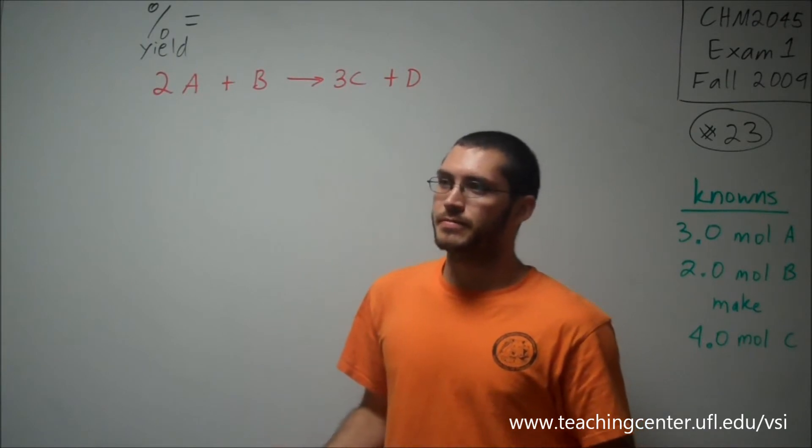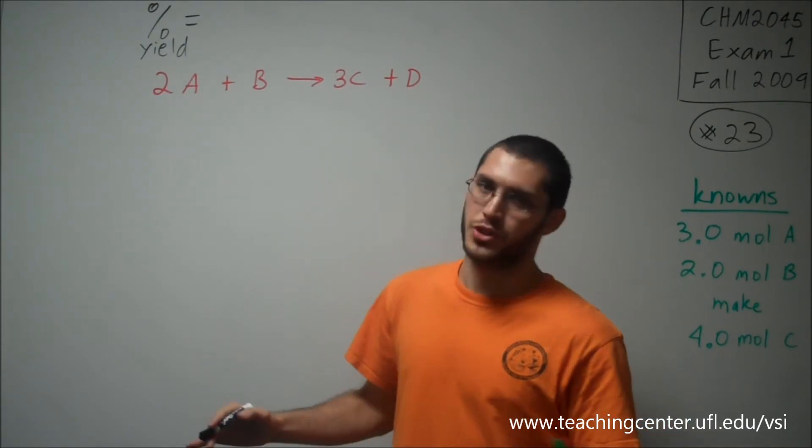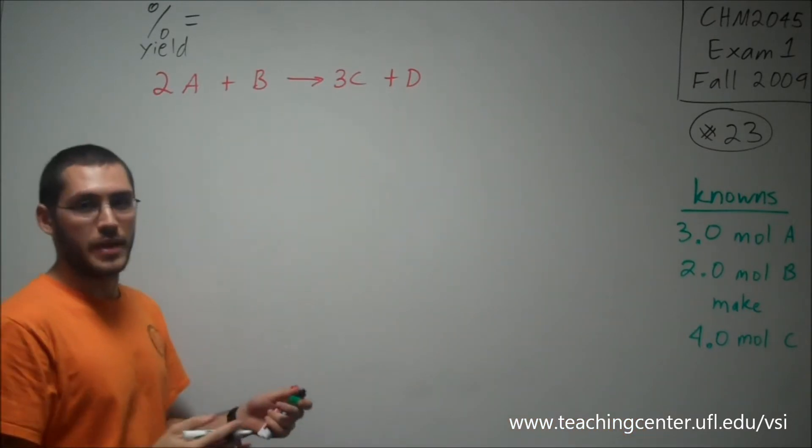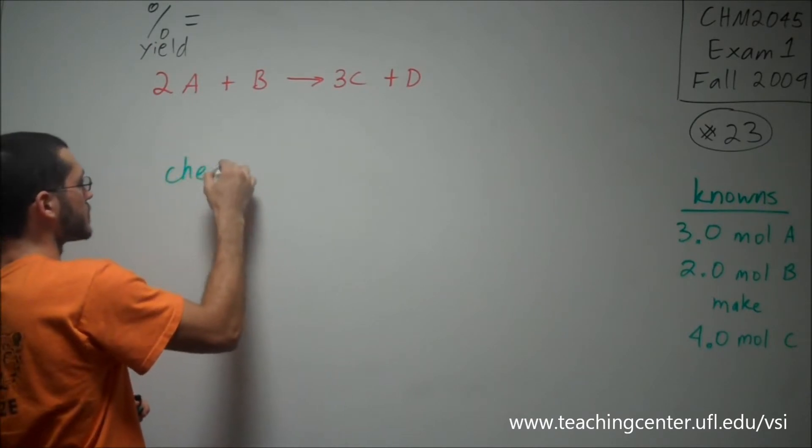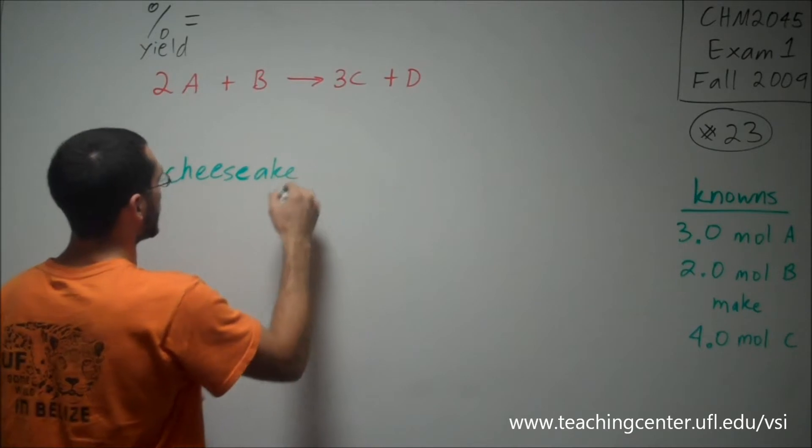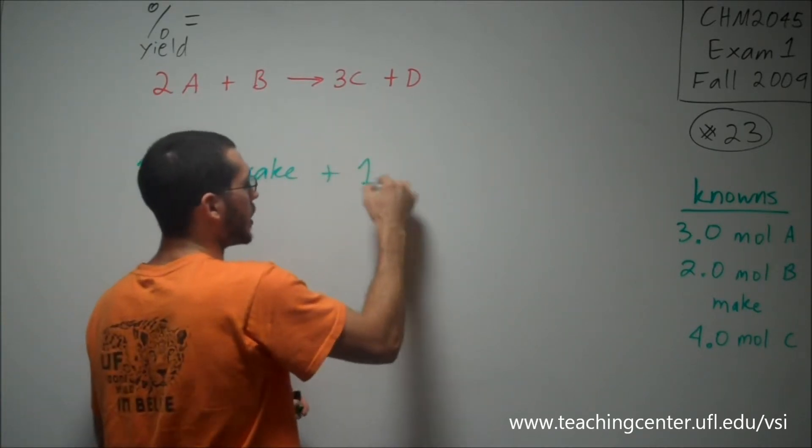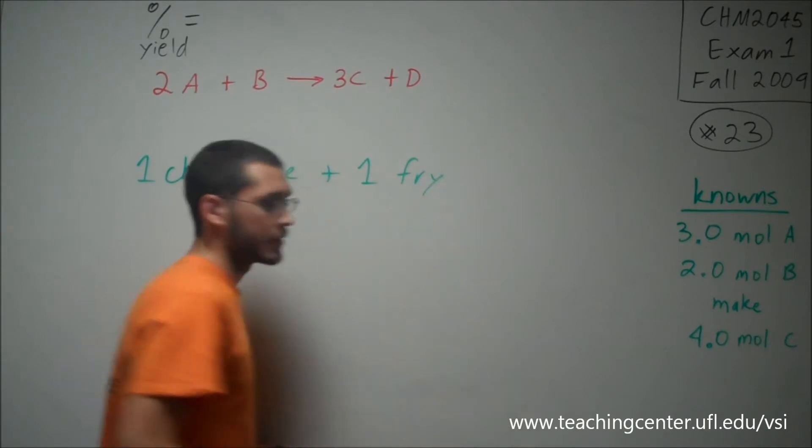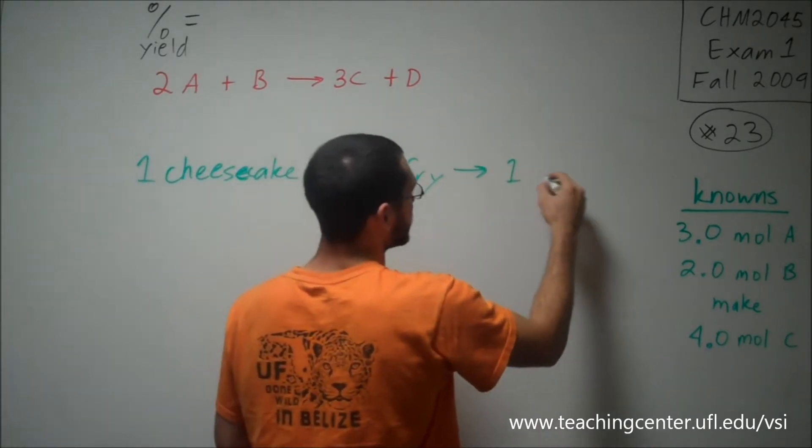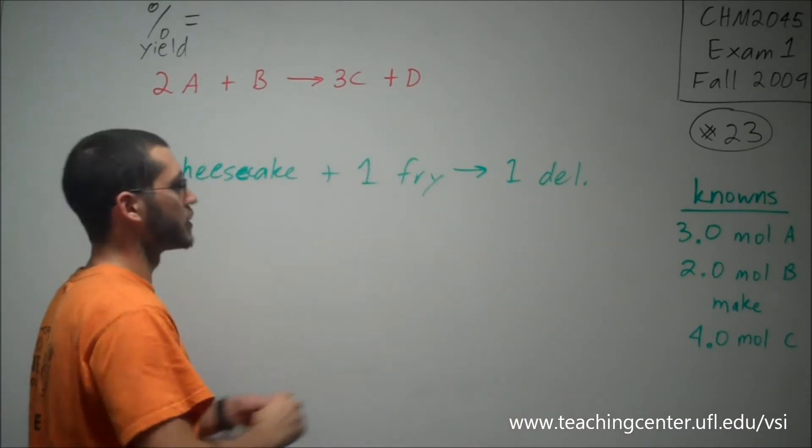What's everybody's favorite dessert, mine included? Fried cheesecake, especially from Chopsticks, delicious. So what does it take to make fried cheesecake? Well, you need cheesecake, of course. Cheese. Cake. And you need one cheesecake and then you need one fry, of course, like oil. And what do you get? You get one deliciousness, we'll say. One great dessert.